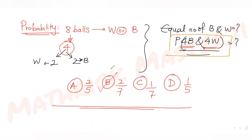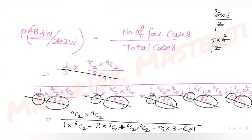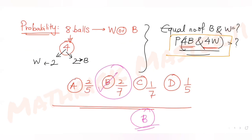So we get 36 divided by 126. Simplifying: 36/126 = 2/7. The answer is two over seven, which matches option B. Option B is the correct answer for this question.